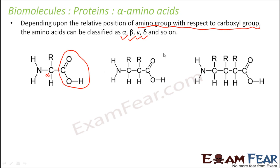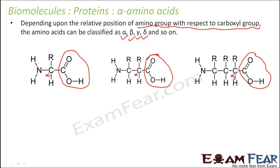Now let us take a second amino acid example. Where is your carboxyl group? This is your carboxyl group. The carbon directly attached to the carbon of the carboxyl group is the alpha carbon. Similarly in another example, this is your carboxyl group, and the carbon directly attached to it is the alpha carbon. Now the carbon attached directly to the alpha carbon is beta, and the carbon directly attached to the beta carbon is gamma.